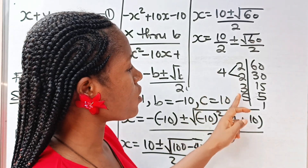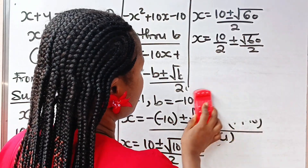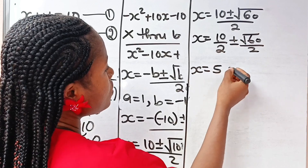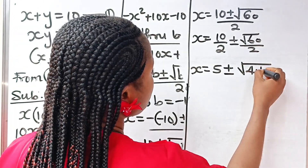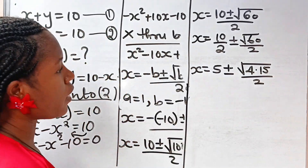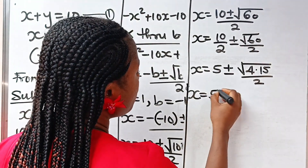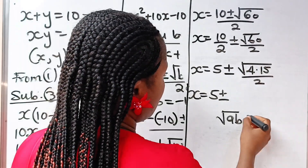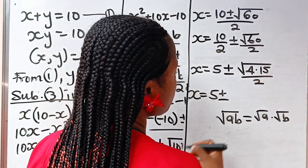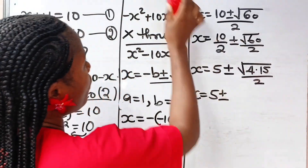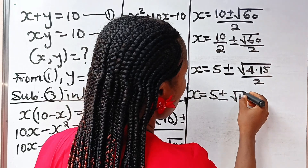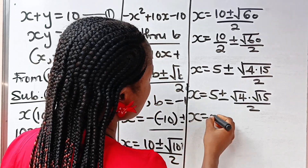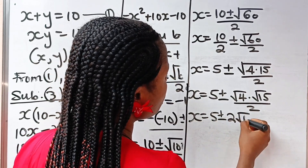So 60 can be expressed as 4 multiplied by 15. So we have x is equal to — 10 divided by 2 is 5 — plus or minus the square root of 4 multiplied by 15, divided by 2. Using the law of surds, square root of (a multiplied by b) is equal to square root of a multiplied by square root of b. So that means square root of 4 multiplied by square root of 15, divided by 2.